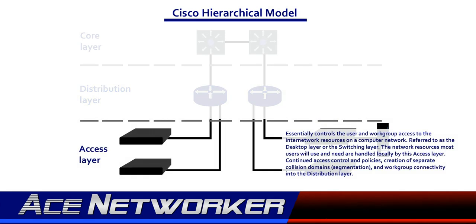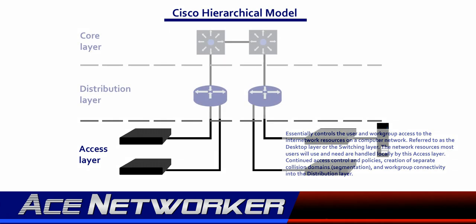The third layer is the access layer in the Cisco Hierarchical Model. The access layer essentially controls user and work group access to the internetwork resources on a computer network. It's often referred to as the desktop layer or the switching layer. The network resources most users need will be available locally and handled by this access layer, while the distribution layer handles any traffic for remote services. Common functions at the access layer include access control and policies, creation of separate collision domains (better known as segmentation), and work group connectivity into the distribution layer.